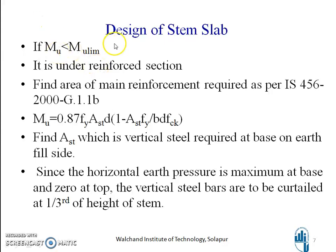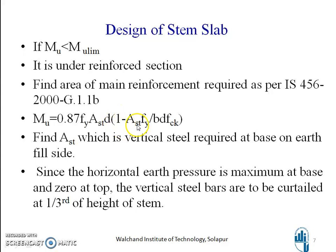If MU is less than MU limit — under-reinforced section — we can find the area of main reinforcement required as per IS 456-2000 clause G.1.1(b): MU = 0.87·Fy·AST·d × (1 − AST·Fy / (b·d·fck)). Solve for AST, which is the vertical steel required at the base on the earth fill side.